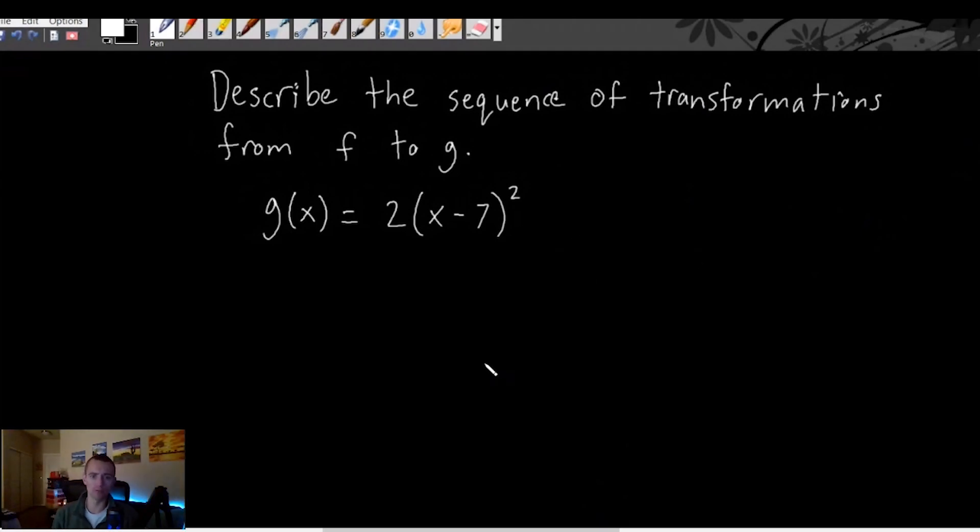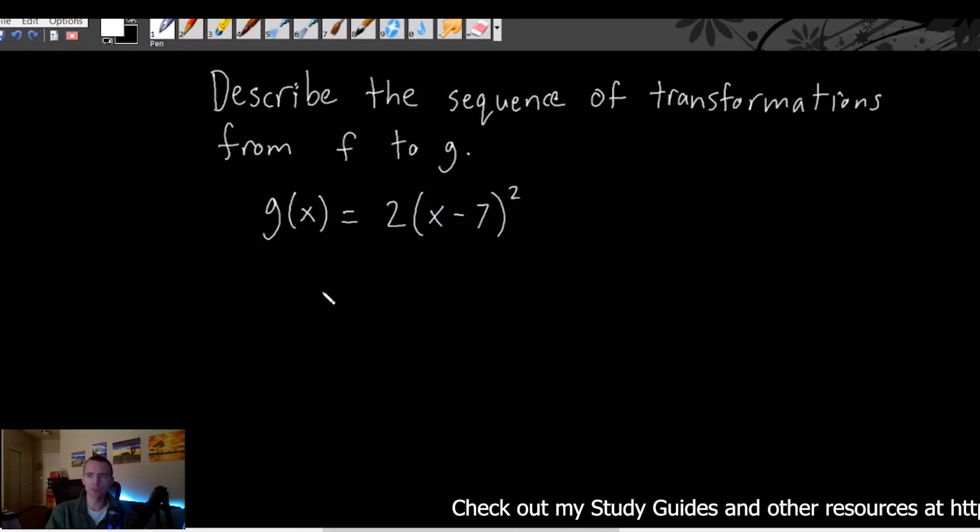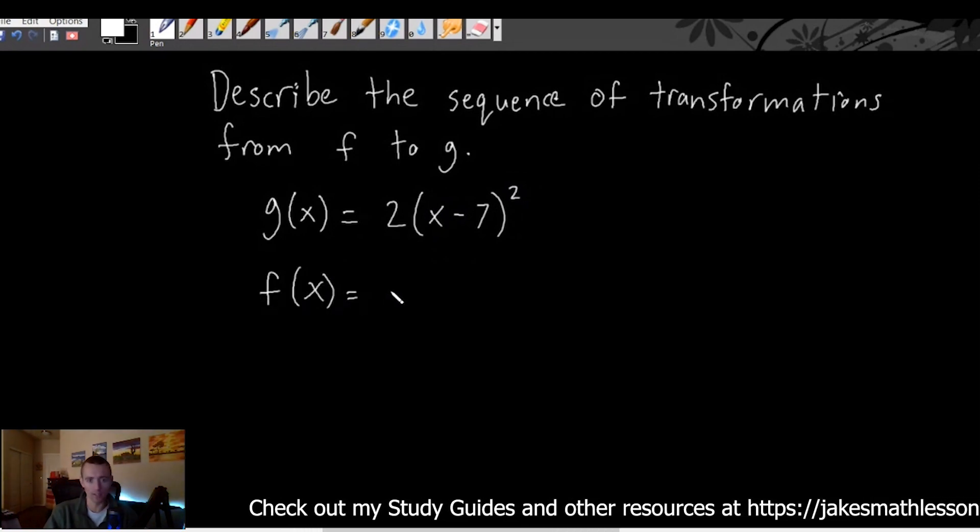Describe the sequence of transformations from f to g. So the first thing you want to do when you're doing a problem like this is figure out what your parent function is that you want to compare this function to. So in this case, having this x plus or minus some number all raised up to the second power generally means that our parent function is just going to be f(x) = x².